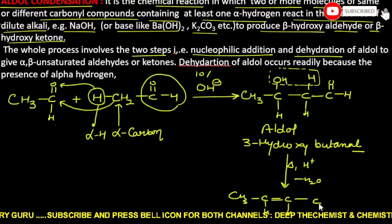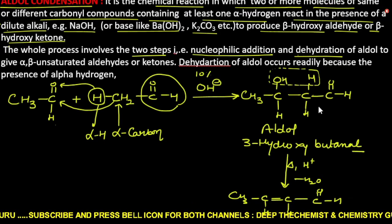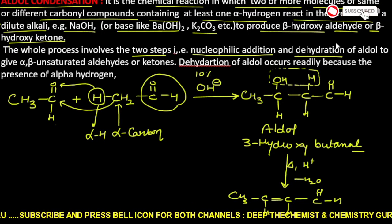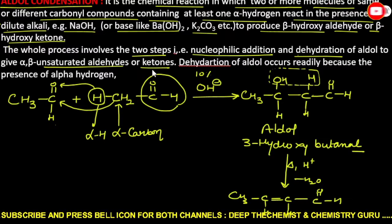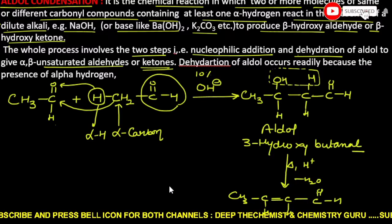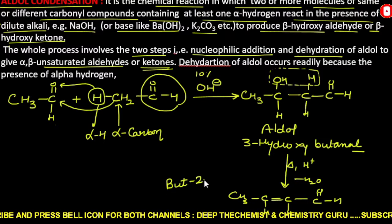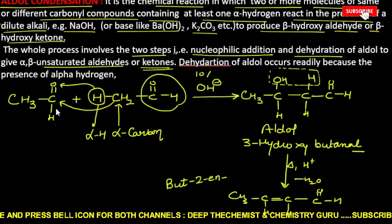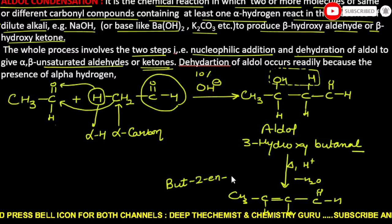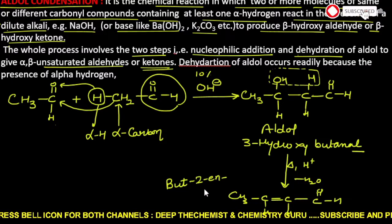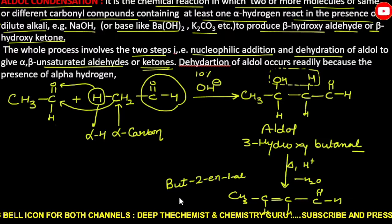Along with this, the aldehyde group remains as it is. This is known as alpha-beta unsaturated aldehydes and ketones. Both ketones and aldehydes can undergo this reaction. Since both molecules in our example were the same, this is called self-aldol condensation, and the product is but-2-enal.